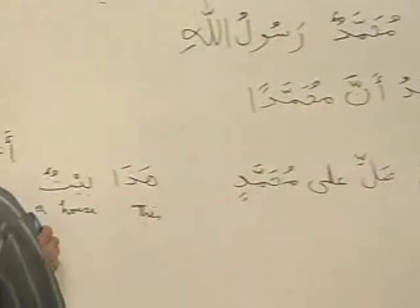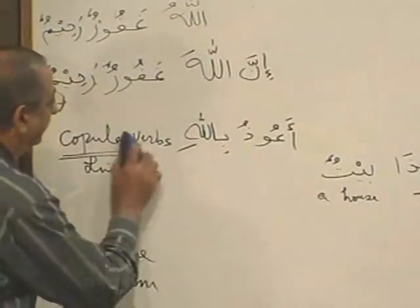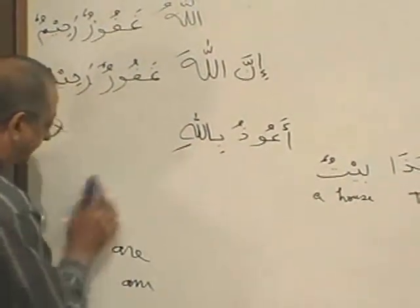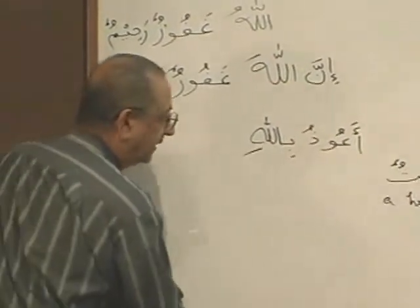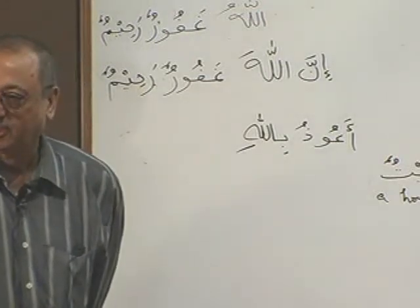Linking verbs are not there. Ma haza — what is the answer? Haza baitun — this is a house. What is this? This is a house. Haza baitun — this is a statement.